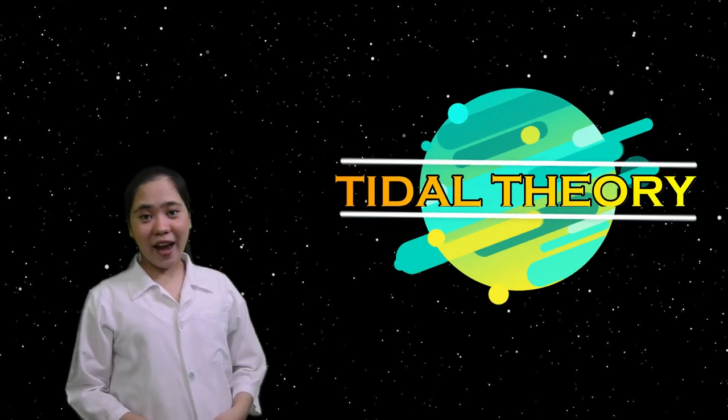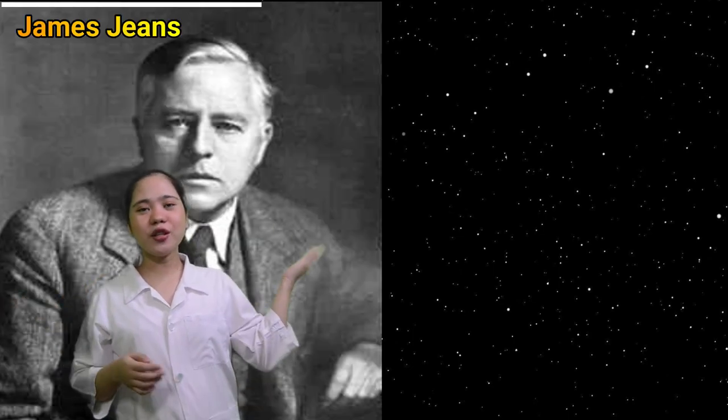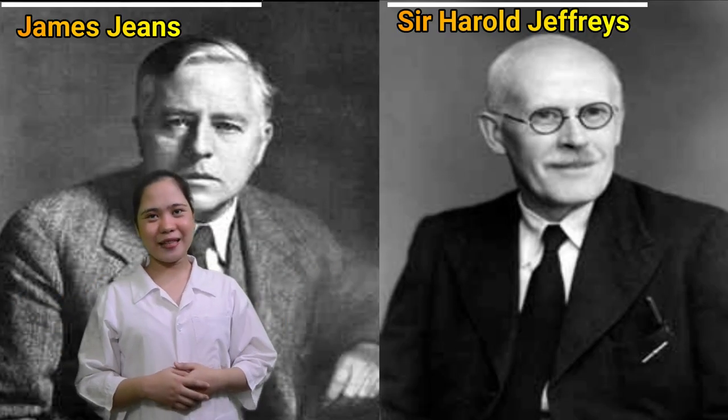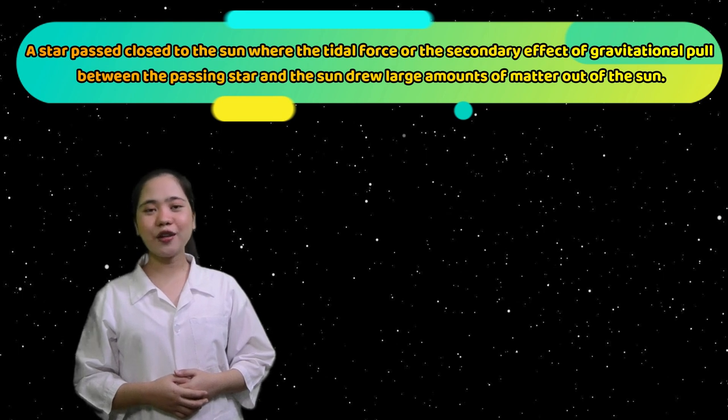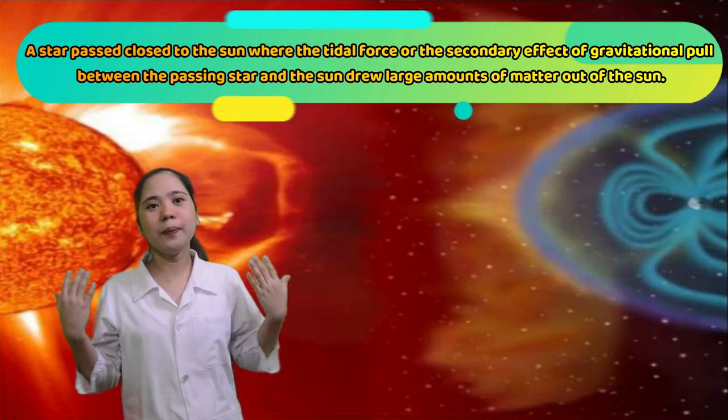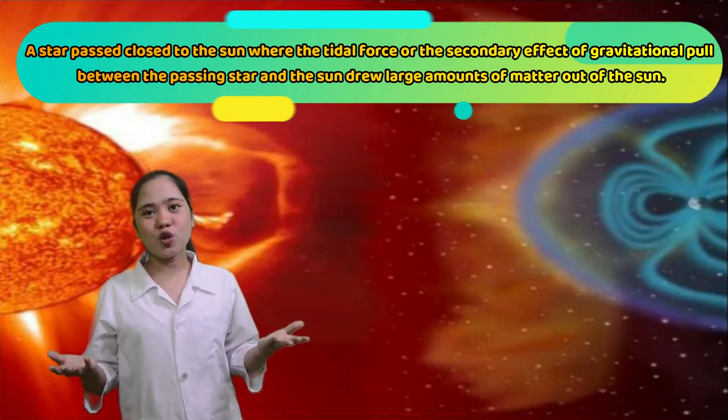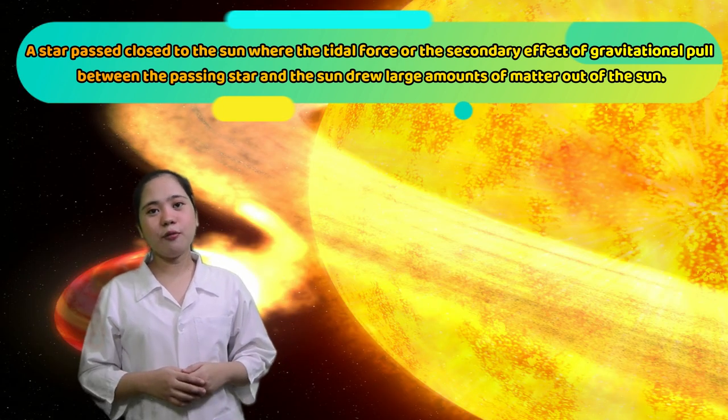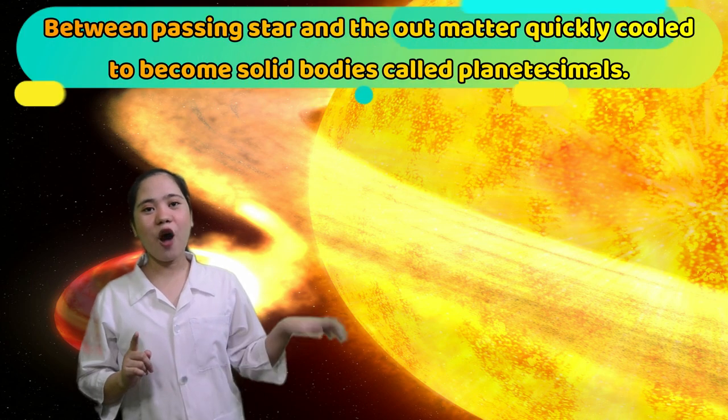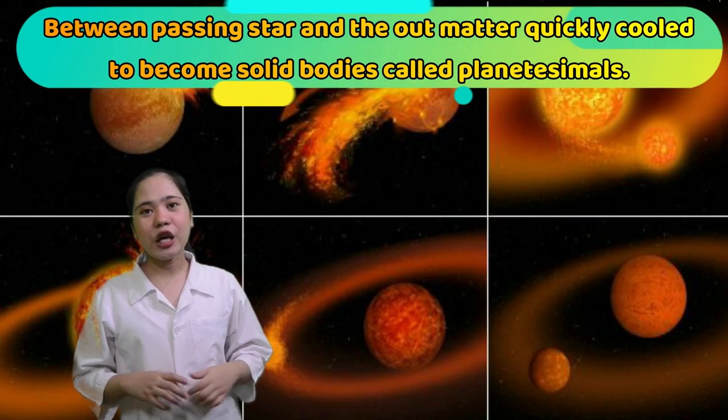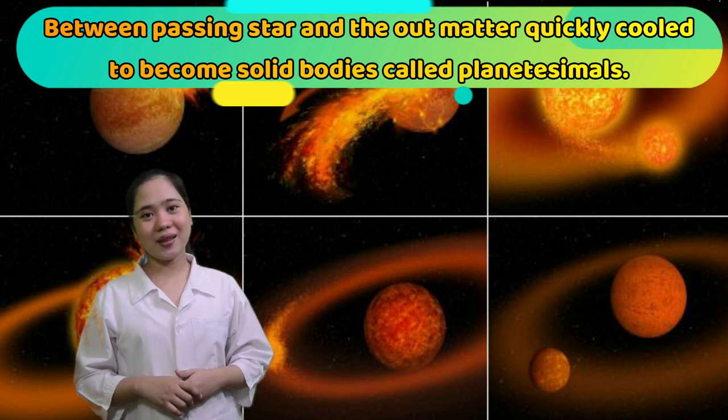And the next theory is the Tidal Theory. And it was developed by James Jeans and Sir Harold Jeffries in 1978. The Tidal Theory states that a star passed close to the sun where the tidal force or the secondary effect of gravitational pull between the passing star and the sun drew large amounts of matter out of the sun.